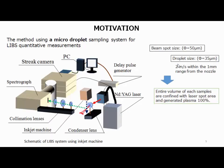This is a schematic of the LIBS system using an inkjet machine. The laser is irradiated from here, and the condenser lens focuses the laser beam. This area is the laser focal point spot. Here is the microdroplet inkjet machine, which can generate 35 micrometer diameter droplets and guide them into the beam spot area. The beam spot diameter is 15 micrometers, so the entire volume of the droplets is guided into the beam spot area.